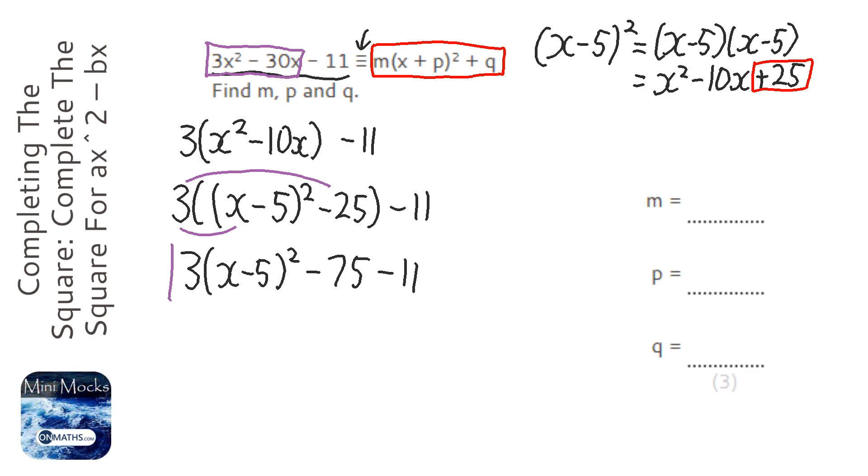So the bit in purple here is exactly the same as the bit in purple in the question. I have not changed anything. But at this point here I can get that minus 75 and I can take away the 11. So I'm just going to collect those two together into minus 86. Now this is exactly as it's shown in the red.